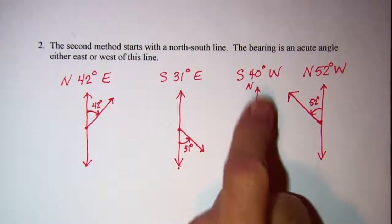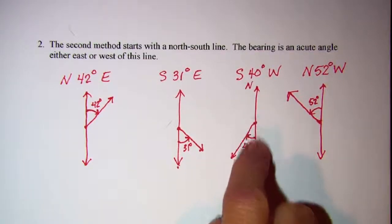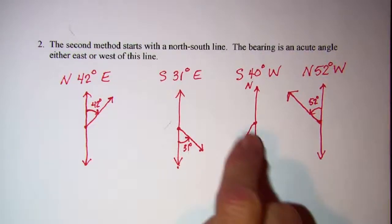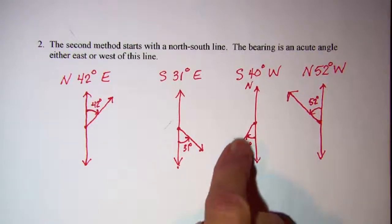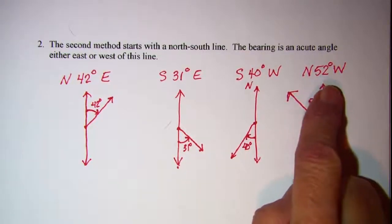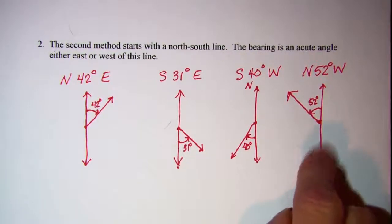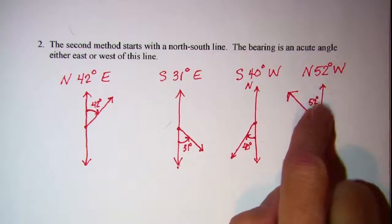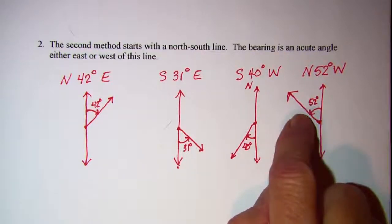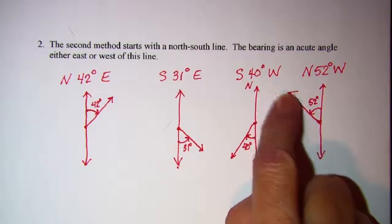South 40 degrees west: start with your north-south line, and from your south line go west 40 degrees, so your bearing would be in this direction. North 52 degrees west: start with your north-south line, and using your north part of that line, go west 52 degrees, so the bearing would be in this direction.